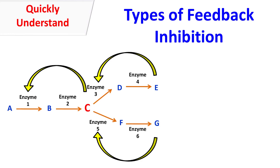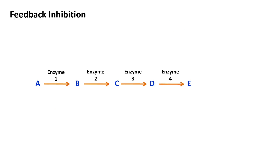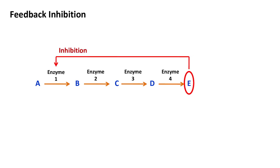Quick biochemistry basics here. Let's talk about different types of feedback inhibition. Feedback inhibition is a phenomenon in which the end product of a biochemical pathway inhibits the first enzyme of the pathway.